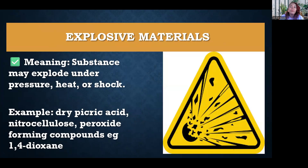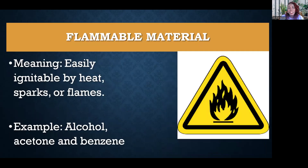The first symbol we're going to look at is explosive materials. It's a yellow symbol with an explosion in the middle, and it means that the substances within this area may explode under pressure, heat, or shock. For example, dry picric acid, nitrocellulose, and peroxide-forming compounds like 1,4-dioxane and others constitute materials or substances that are explosive in nature.